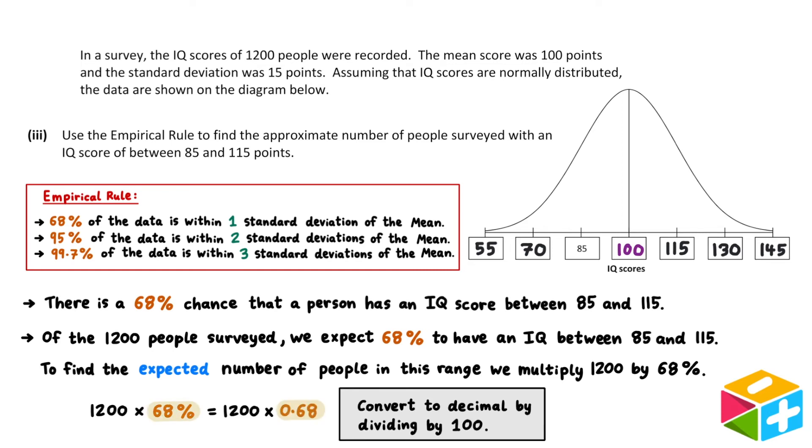Some calculators can struggle with the percentage symbol, so it would be useful to convert the 68% to a decimal. To do this, all we have to do is divide by 100. So 68% is equal to 0.68 as a decimal. Using our calculator, we see that 1,200 times 0.68 is equal to 816. So our final answer here is that we expect 816 people to have an IQ score between 85 and 115.